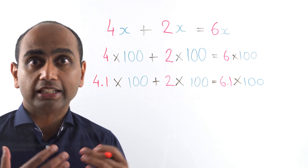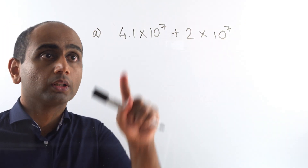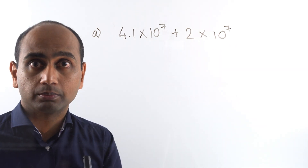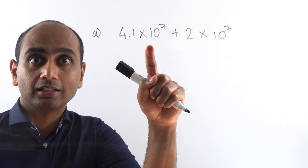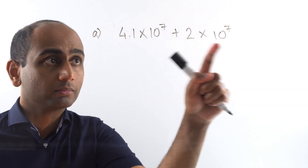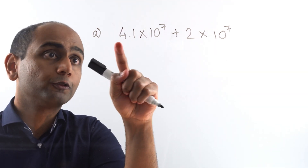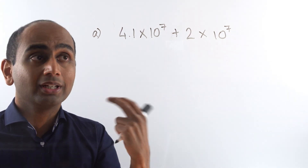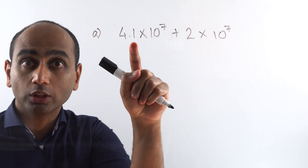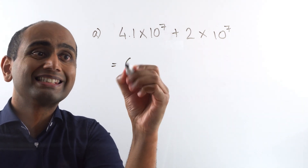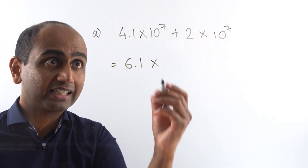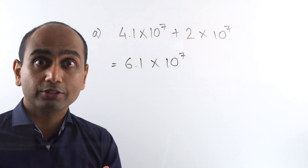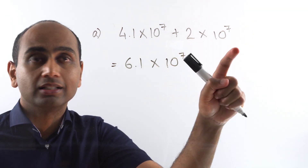Let's get into the examples. Here's example A. I've got 4.1 times 10 to the power of 7 and I want to add that to 2 times 10 to the power of 7. Notice we've got the same powers of 10 in these numbers — 10 to the power of 7. What that means is I've got 4.1 lots of something plus 2 lots of the same thing, so that makes 6.1 lots of 10 to the power of 7.